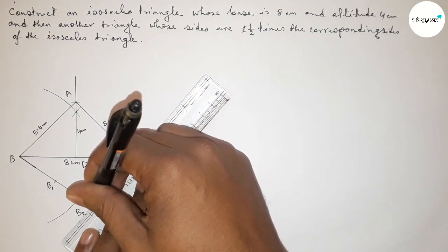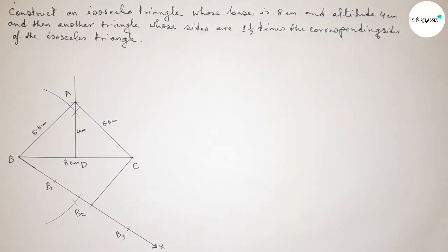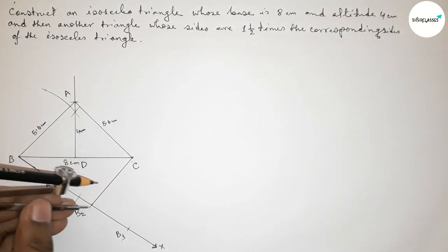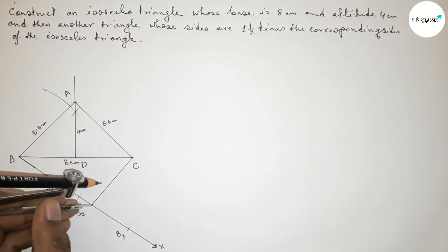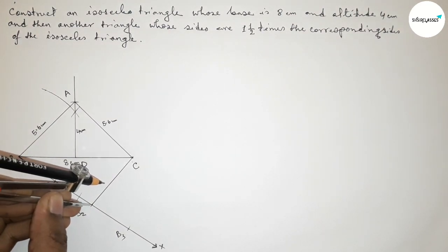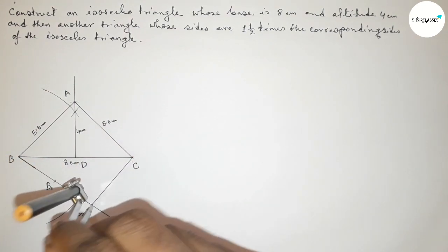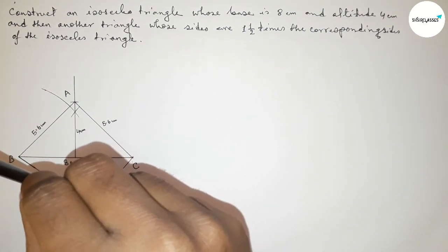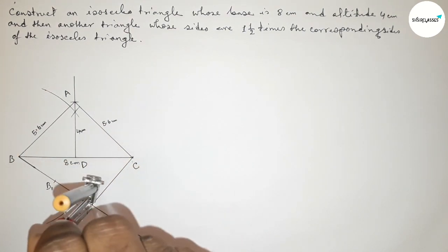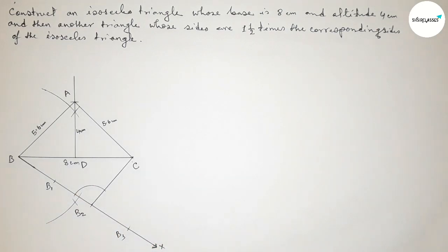Next, joining the line B2C. Now we have to draw a line parallel to B2C at point B3. First taking the angle — taking any length and drawing an arc.